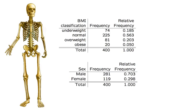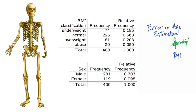Our anthropologist is interested in learning about how the error in age estimation is associated with the body mass index, but it's important to also consider the effect of sex. If the error in age estimation also differs with sex, it will be important to understand if the body mass index classification differs with sex for these observations. As one of the first steps in understanding these data, we should investigate the joint distribution of BMI classification and sex — for example, do we have equal numbers of females and males who are obese, or equal numbers in the underweight category?